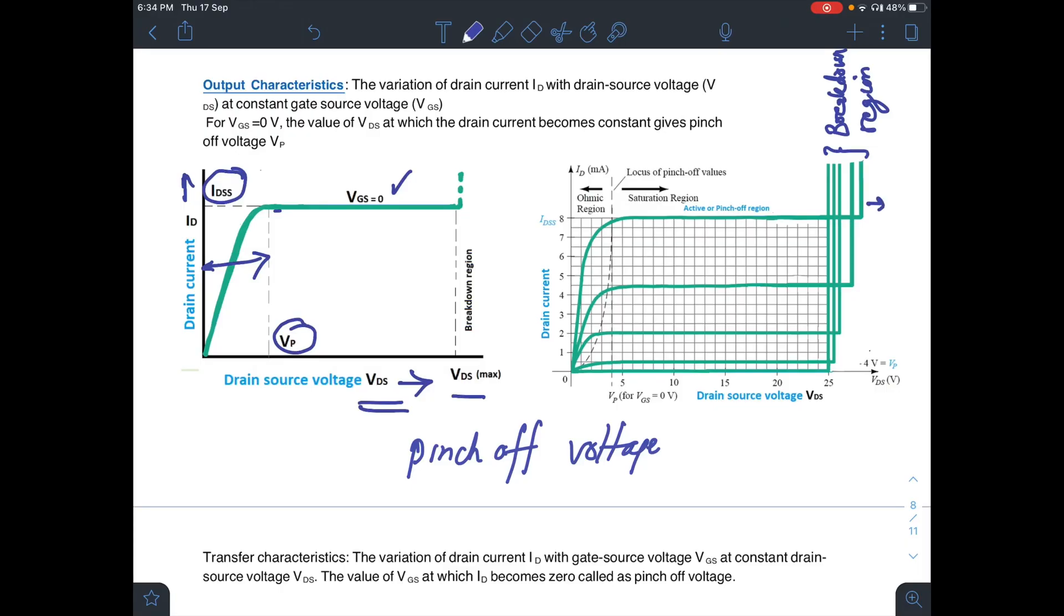This first curve is for VGS equal to 0V. This is for VGS equal to minus 1V. You apply VGS equal to minus 1V, a negative bias or reverse bias at the input circuit. What will happen? Obviously, the drain current will reduce and you will have a curve like this.